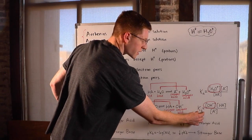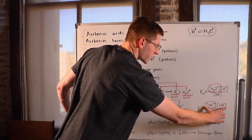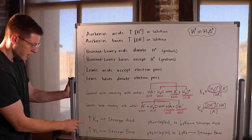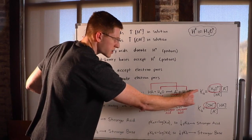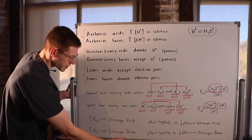We can say that the bigger the Kb, the more OH- we have, because the bigger the numerator, and the stronger the base is. So thus, increased Ka, the bigger the Ka, the stronger the acid. The bigger the Kb, the stronger the base.